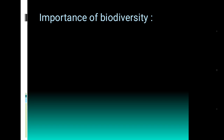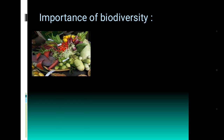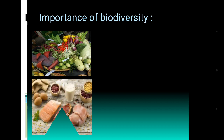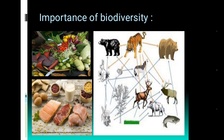Now, what is the importance of biodiversity? First, because of biodiversity among plants and animals, there is variation in the food sources of organisms. One organism can collect food from different sources, and whenever one source is absent, the organism can survive by collecting food from other sources.